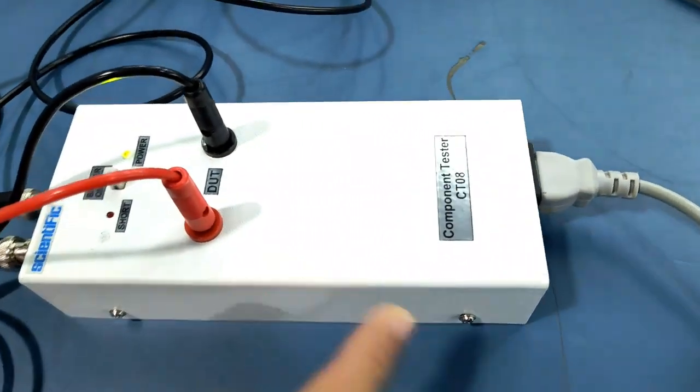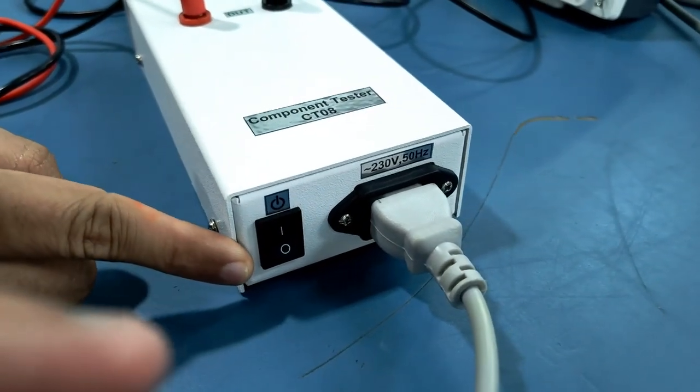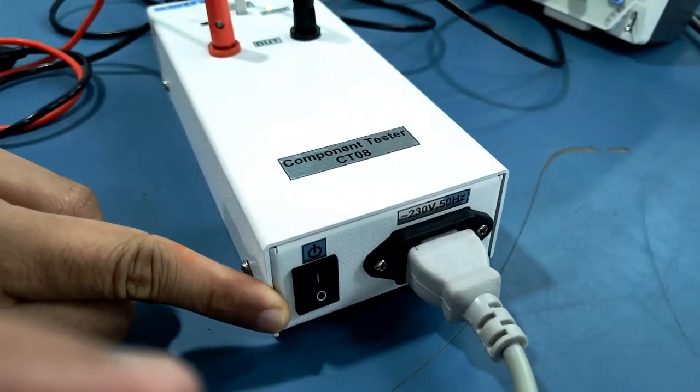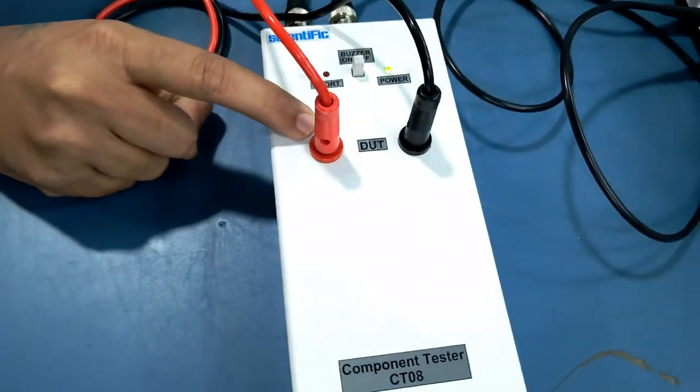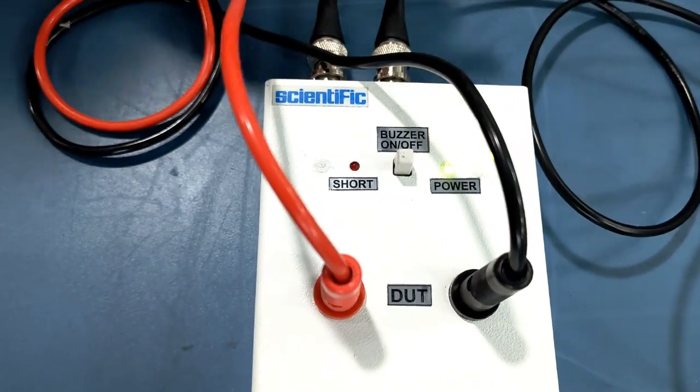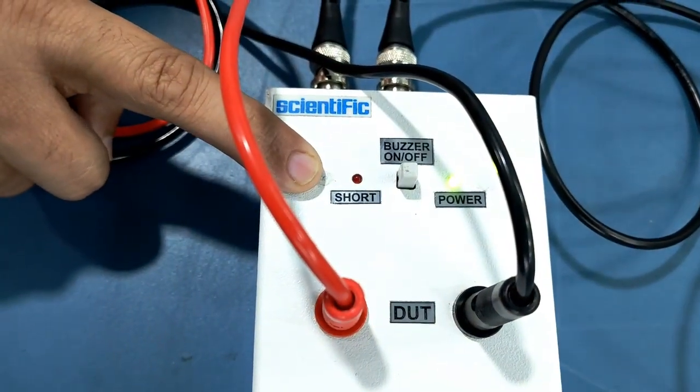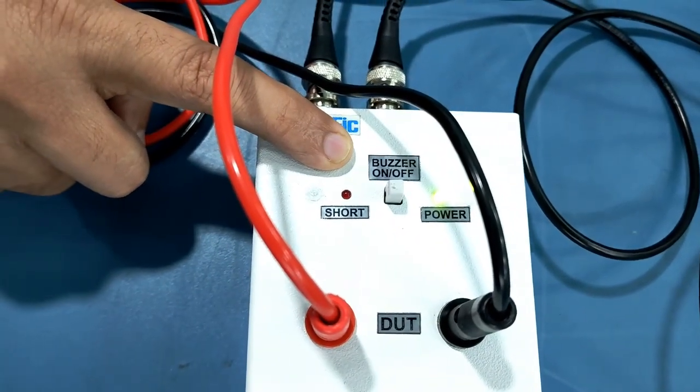This is the unit. Here we have connected the mains power supply. This is the button to turn the component tester on and off. Here we can connect our devices under test. This is the power indicator light, this is the short circuit indication light, and here we can turn the buzzer on and off.